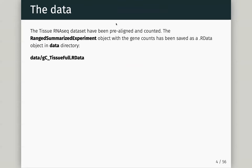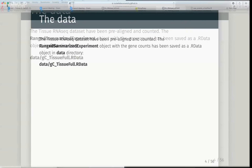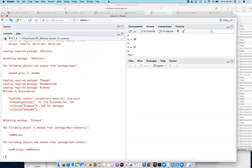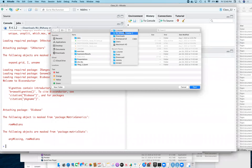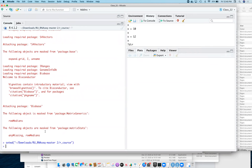I aligned it the same way, counted it the same way, and this produced a RangedSummarizedExperiment object which had our counts in genes, and then I've saved that as an R data file. So you can load this now — often this is what you'll do. You'll get your data, save it as an intermediate file. I've saved it in the data directory: gctissue_full.RData. To follow along, do Session > Set Working Directory to wherever you've downloaded the material for this class.